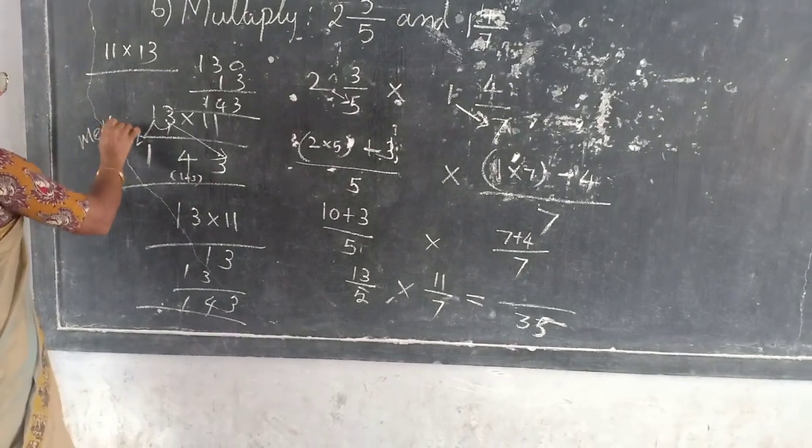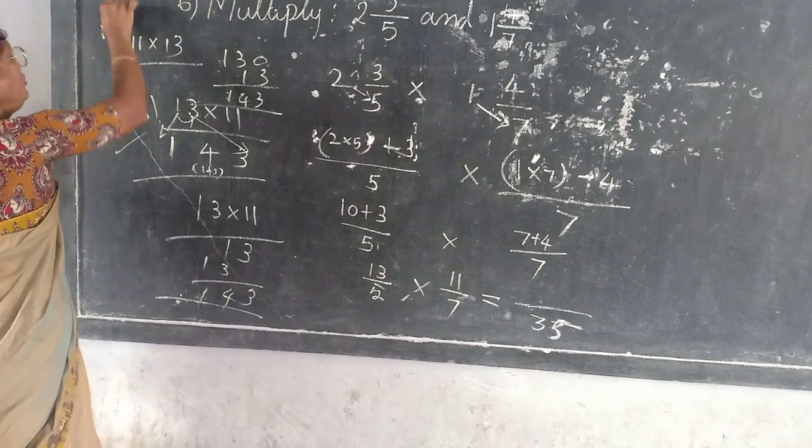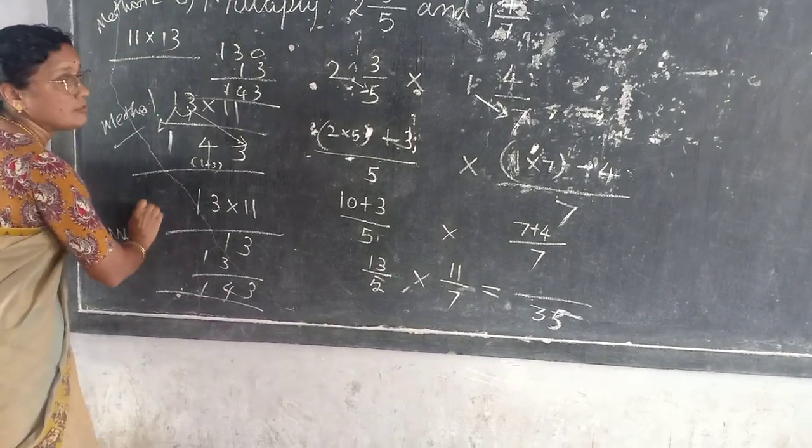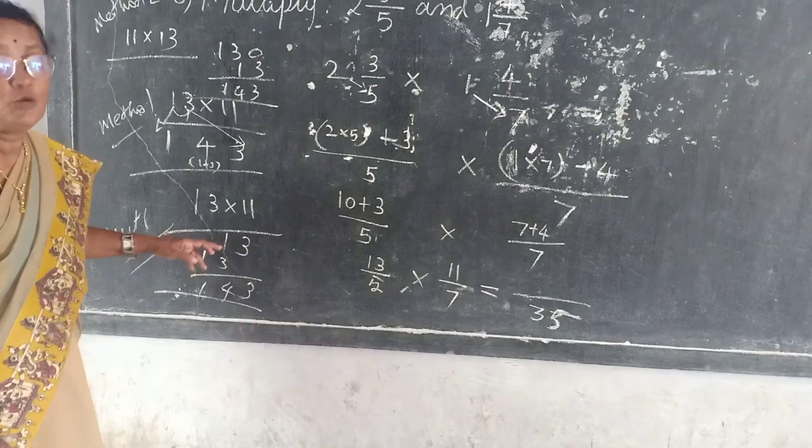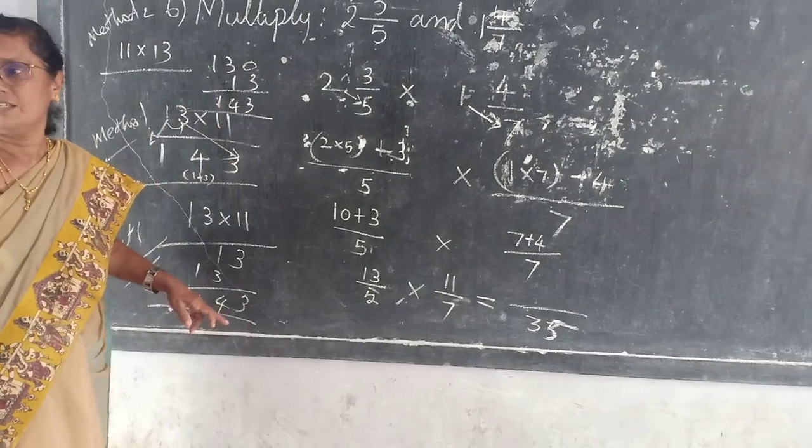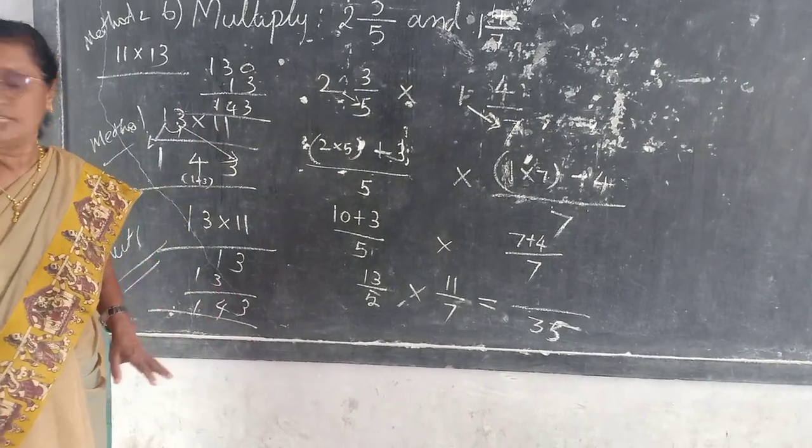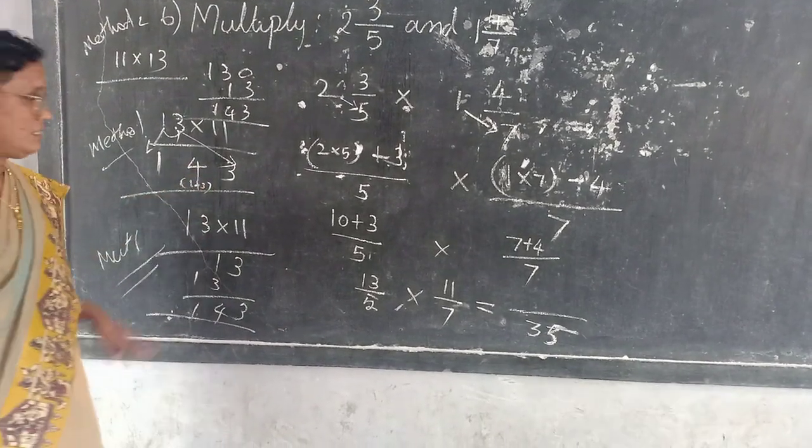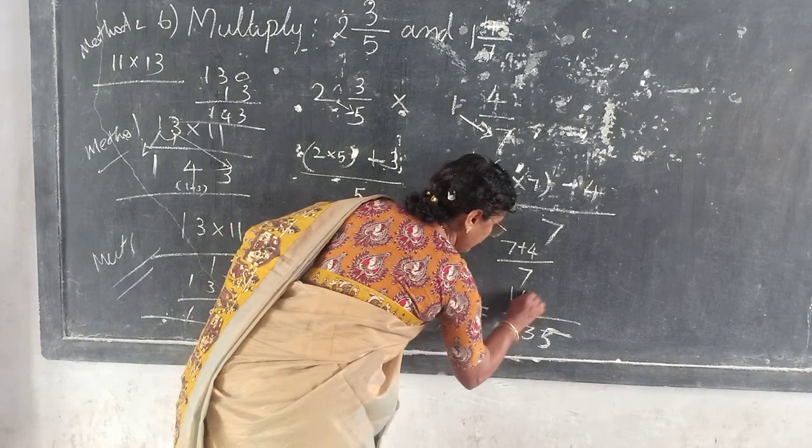Method 1. Method 2. Method 3. Do you follow? Yes ma'am. Whichever you prefer, you do it. Which one you find easy, you do it. This is the easy way. These are all called Vedic maths. Understand? So 143.